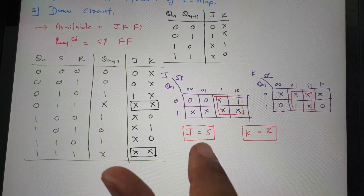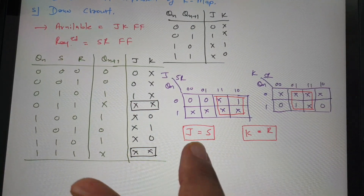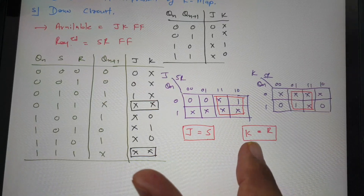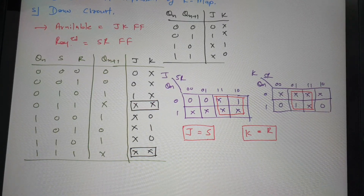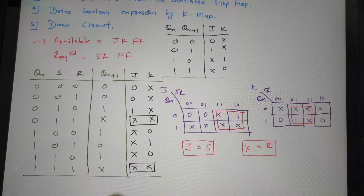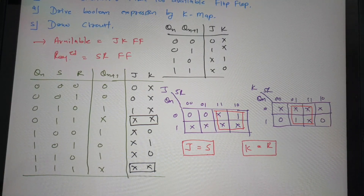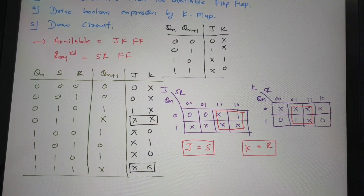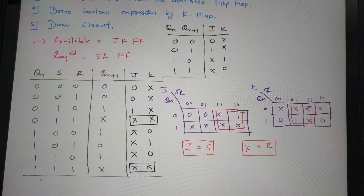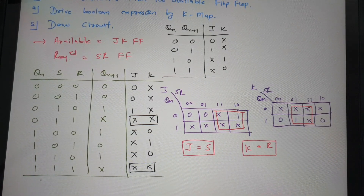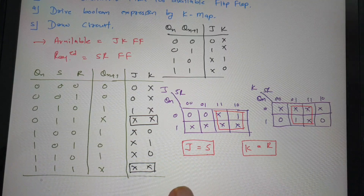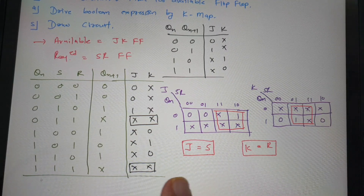If you observe JK to SR conversion, it appears that J=S and K=R as per the basic calculation. But both are fundamentally different flip-flops. In a JK flip-flop, when J=1 and K=1, the output performs a toggle operation. But in SR, when S=1 and R=1, it is an invalid operation. So we cannot form SR flip-flop using JK flip-flop.